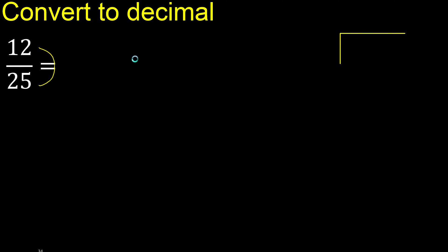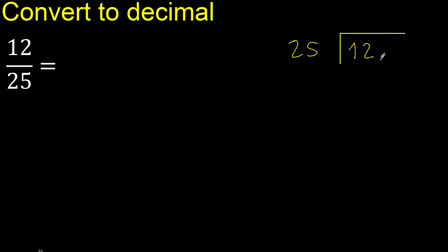12 divided by 25. 12 is less than 25, therefore complete — always complete with 0. Here: 0 point.